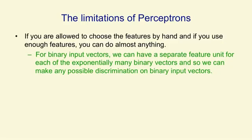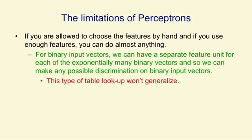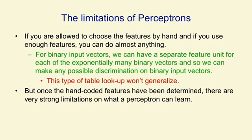But of course, that's not a very good strategy for solving a practical problem because you need an awful lot of feature units and it won't generalise. You can't look at a subset of all possible cases and have any hope of getting the remaining cases right, because those remaining cases require new feature units and you don't know what weights to put on those feature units. Once you've decided the hand-coded features, there are very strong limitations on what a perceptron can learn to do.